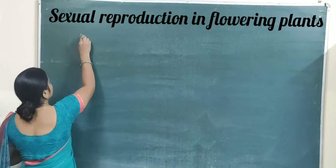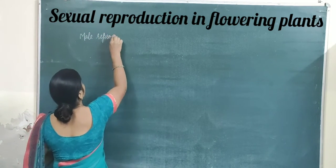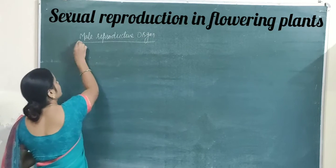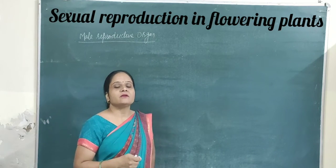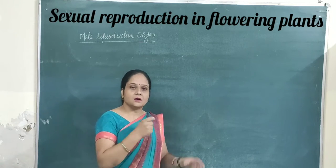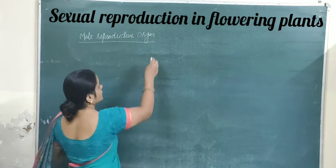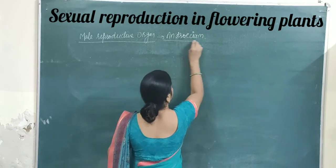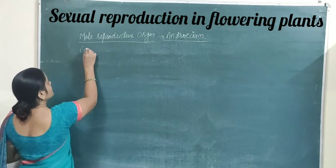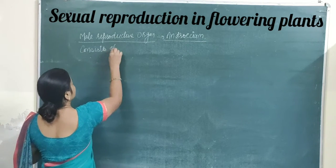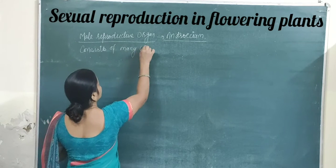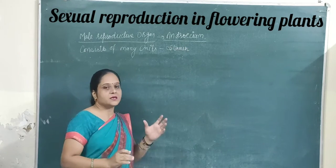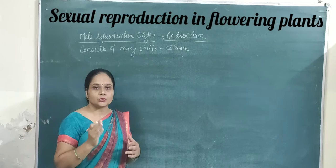The male reproductive organ is commonly known as the androecium. This androecium consists of many units which are named as the stamen, and this stamen consists of two different parts.